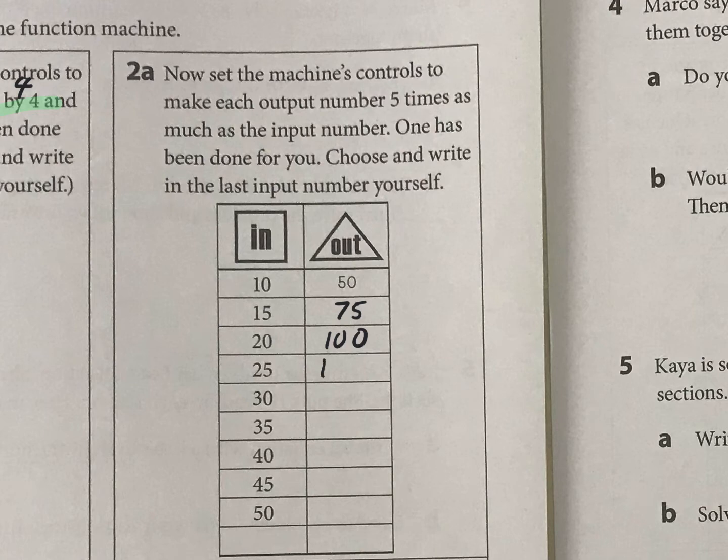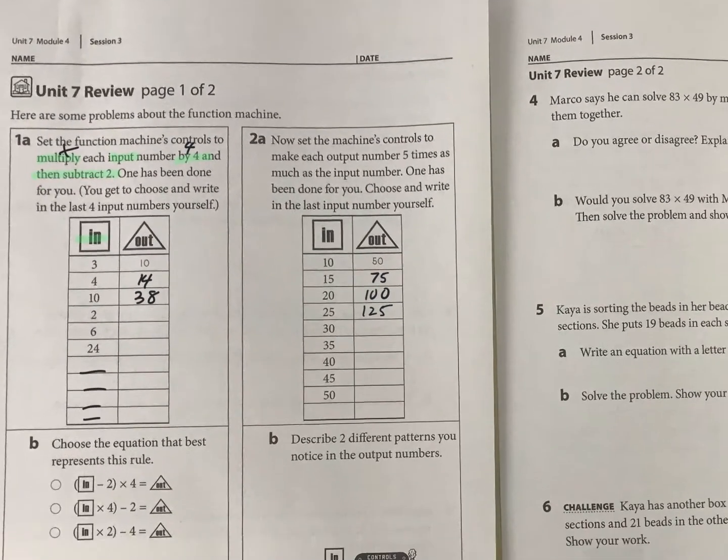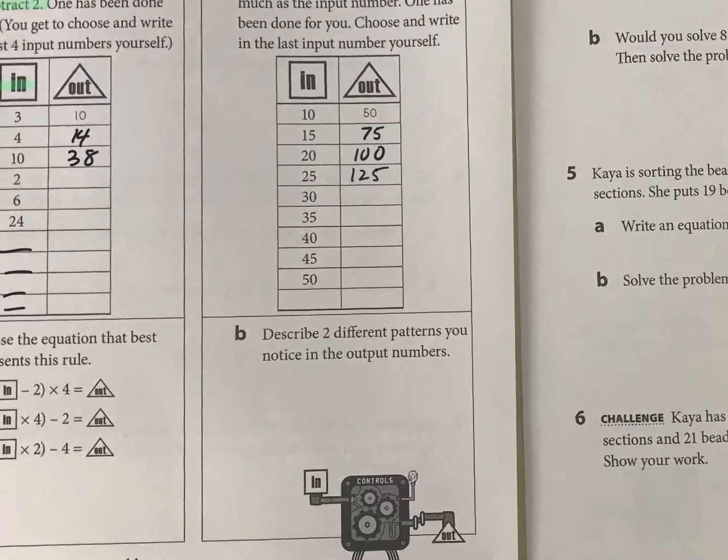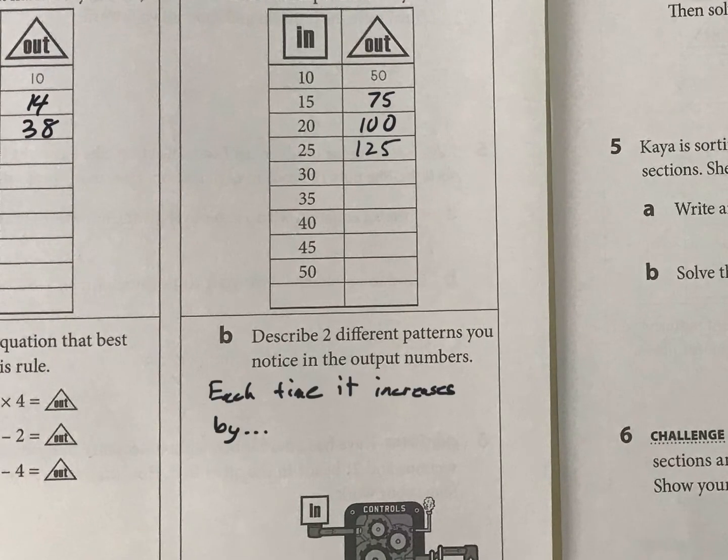Do you get the pattern now? Because the next part says describe the patterns you notice in the output numbers. You might say something like each time it increases by how much - it's increasing by 5 each time you go up. Or they might see a pattern - maybe you see a pattern in the ones place or the tens place as you look down further.